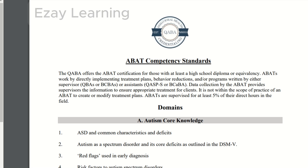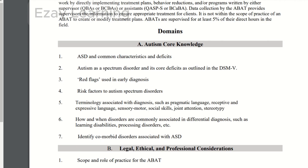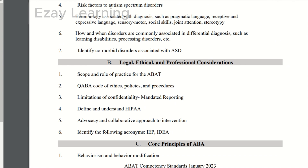These are the competency standards we are following to prepare for a BAT exam. So far we have covered the first domain, which is related to autism core knowledge. We have covered ASD and its common characteristics and deficits, its red flags, risk factors, terminologies, commonly associated disorders, and comorbid disorders.